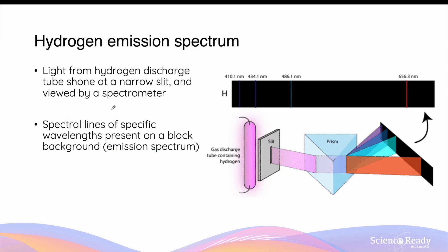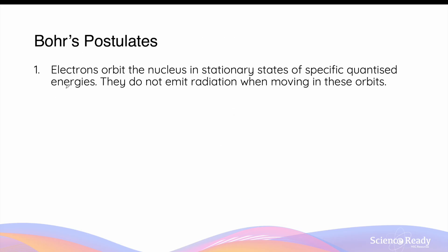Before we discuss Bohr's atomic model, it is important to understand the hydrogen emission spectrum. The light emitted from a gas discharge tube containing hydrogen, when passed through a single slit and through a glass triangular prism, produces multiple discrete visible lines on a black background — this is known as the emission spectrum of hydrogen. Before the development of Bohr's model, scientists were conflicted as to why these lines were produced. Bohr's atomic model was developed in a manner to account for the production of these emission lines of the hydrogen atom.